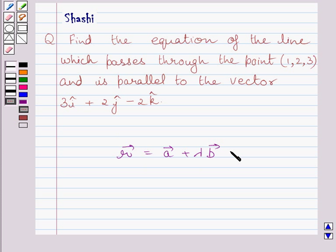In this equation, a vector is the position vector of the given point and r vector is the position vector of an arbitrary point p on the line, and lambda is the parameter. This is the key idea to solve the given question.